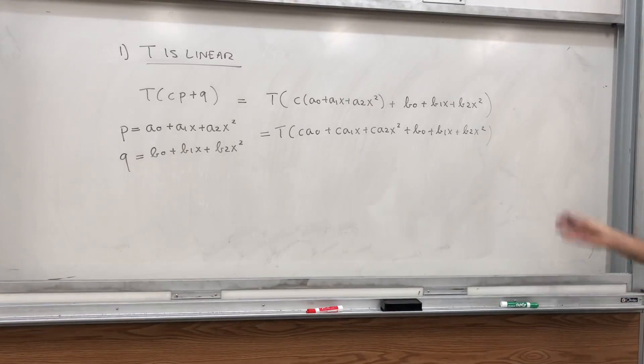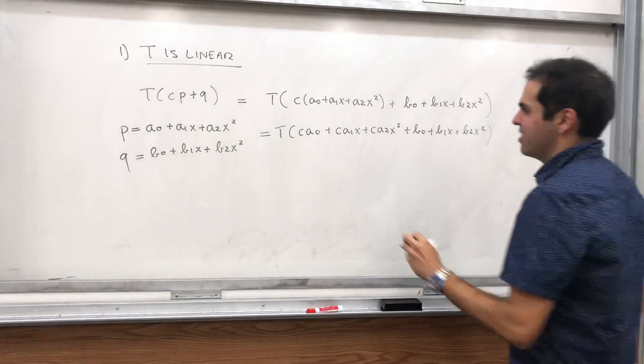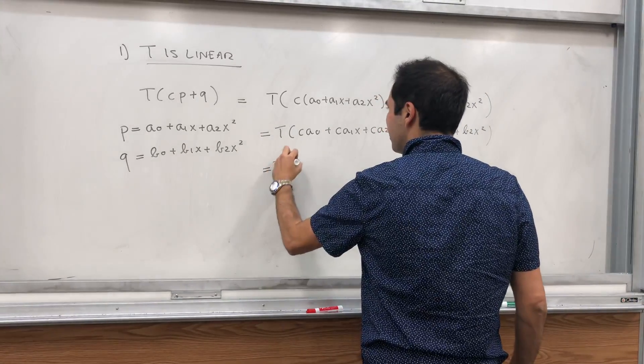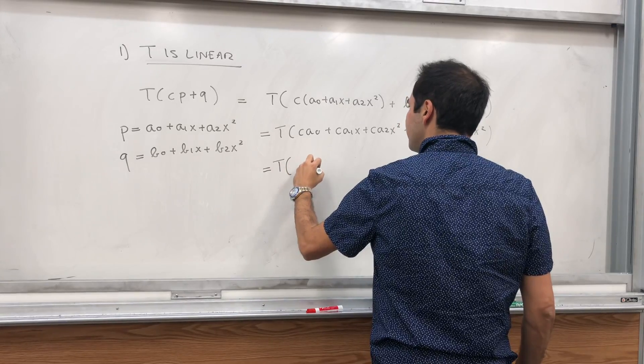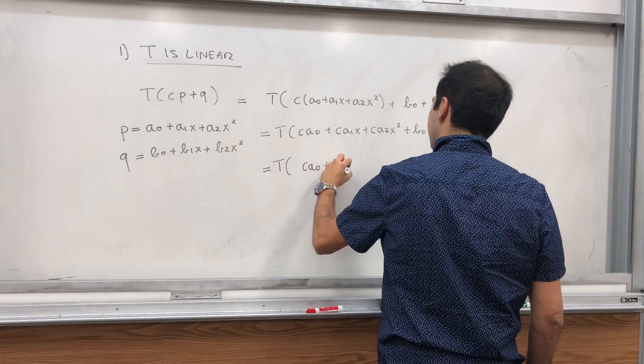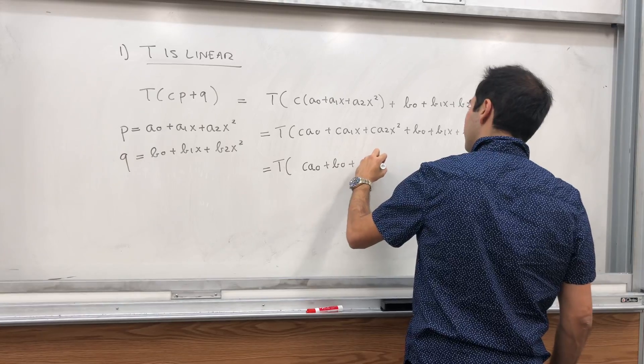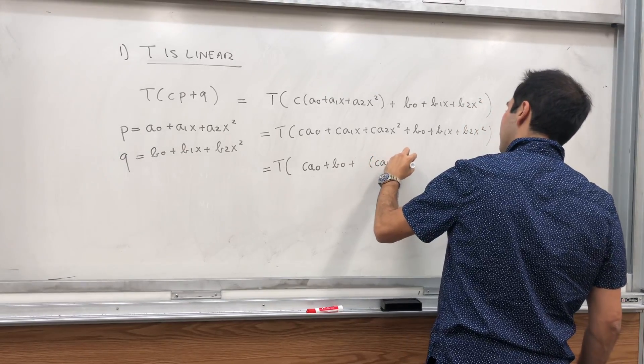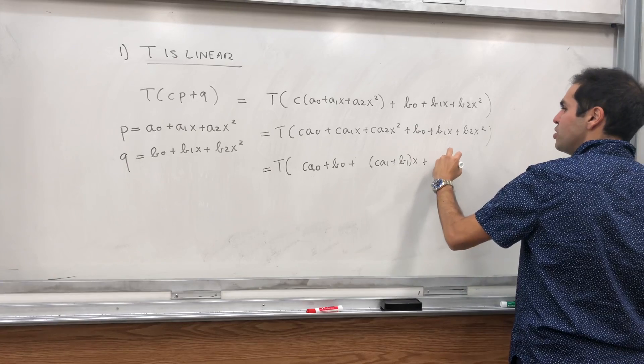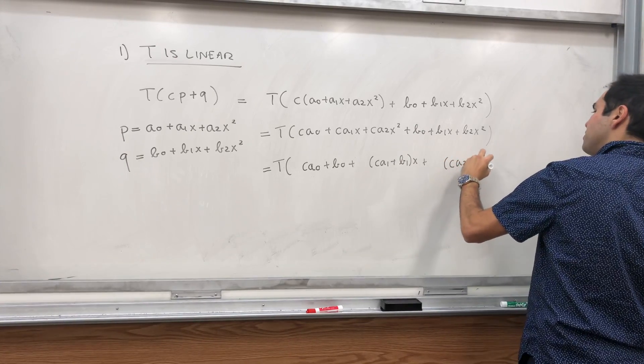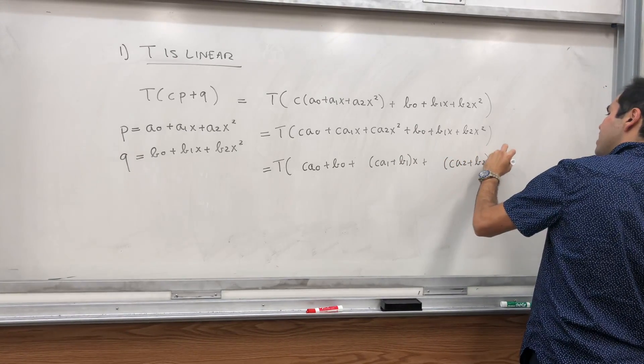Now let's just put terms that are alike together. So this is T of (Ca0 plus b0) plus (Ca1 plus b1)x plus (Ca2 plus b2)x squared.